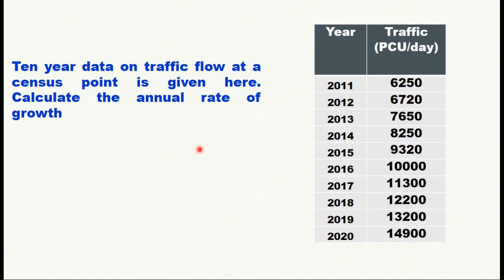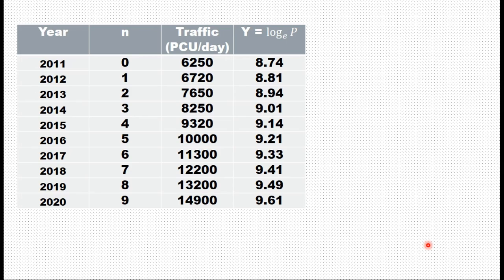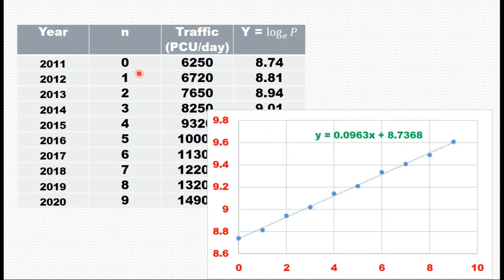For example, 10-year data on traffic flow at a census point is given in a table. Calculate the annual rate of growth. From year 2011 to 2020, the traffic flow in PCU per day is given. The table is redrawn with year as n, 2011 as the base year (n = 0), and 2012 onward as n = 1, 2, 3, and so on, with corresponding traffic values in PCU per day. You take log of the traffic values to get y = log(P), then establish a relationship between y and n, drawing a regression line with year (0 to 9) on the x-axis and log(P) on the y-axis.